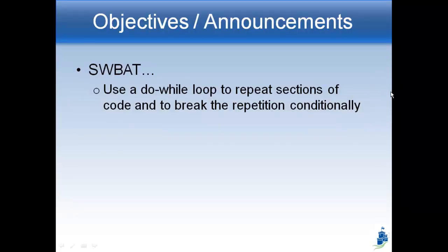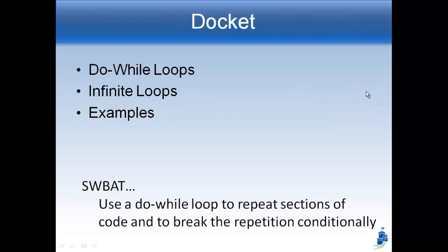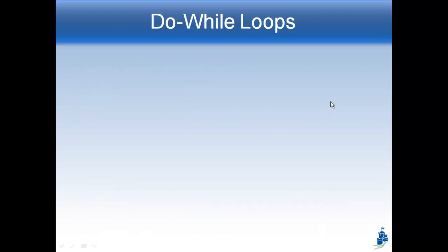The objective for today will be to use a do-while loop. A do-while loop is another kind of loop, so it repeats sections of code just like a for loop does, but it has a difference in something to do with the way that the repetition is broken. We're going to do that conditionally. We'll start by introducing do-while loops, then we'll talk about this new danger called infinite loops, and I'll show you some examples.